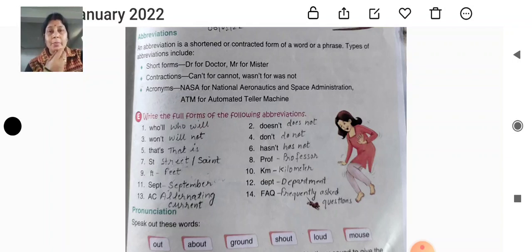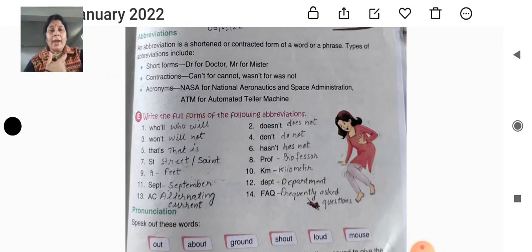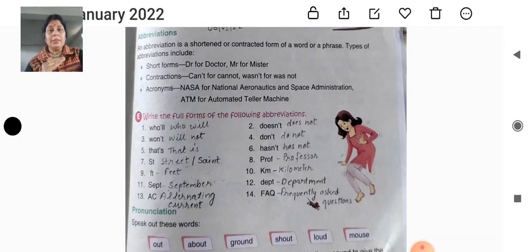Jho bhi hum bolte hai, woh sahi ucharan jho hona chahiye, woh hum nahi kar pate hai. Kyunki humko right pronunciation kis tariqe se karna hai, woh exactly pata nahi hota hai. Iske liye phonic — jho sound hota hai — uski knowledge honi chahiye.